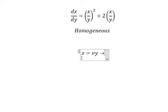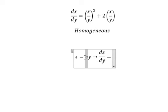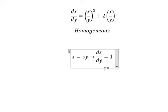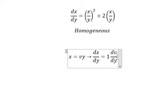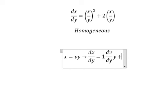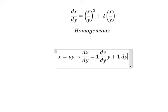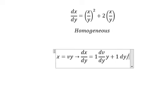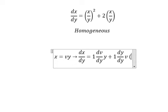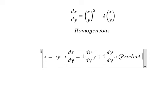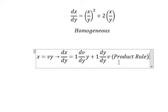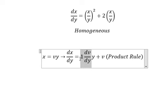We need to differentiate both sides. This gives us dx/dy equals dv/dy multiplied by y, and dy/dy multiplied by v. That is the product rule for differentiation.